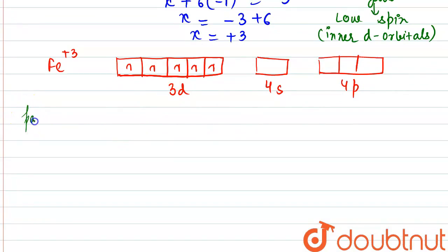after pairing of the electrons, the configuration will look like this. These electrons would be paired up: 1, 2, 3, 4 and 1 electron would be free here and 4s is vacant.